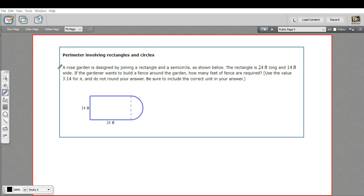Let's read the problem and then figure out how we're going to do this. It says a rose garden is designed by joining a rectangle and a semicircle, as shown below. Okay, so this is half of a circle. The rectangle is 24 feet long and 14 feet wide. If the gardener wants to build a fence around the garden, how many feet of fence are required? So that's going to be the perimeter, the distance around the outside.